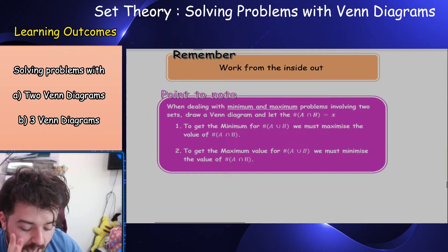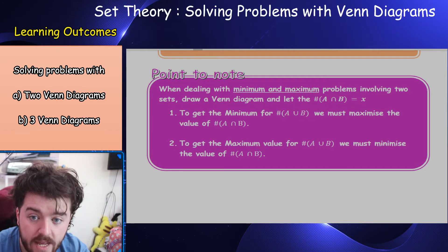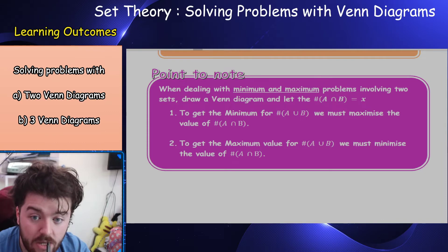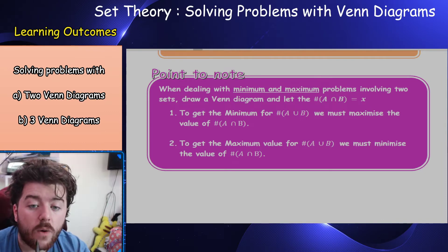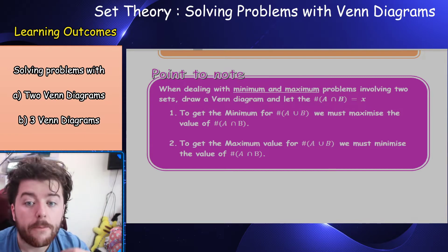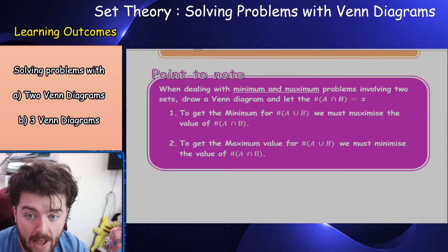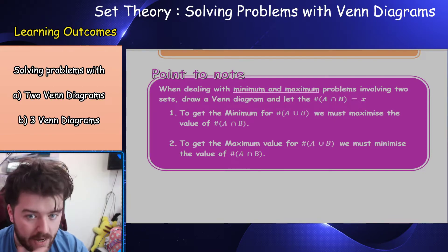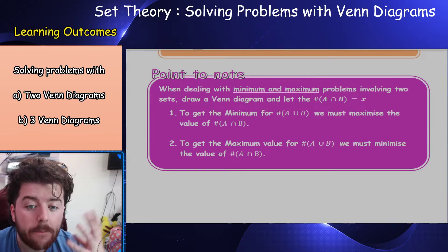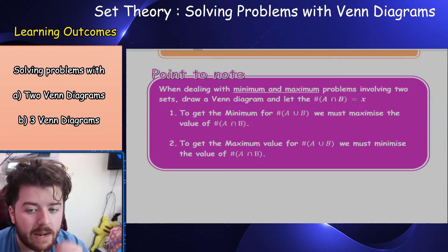A little point to note: when dealing with minimum and maximum problems involving two sets, we draw a Venn diagram and let the intersection equal x. If the question asks for a minimum value of the union, we must maximize the value of the intersection, and vice versa. If we want the maximum value of the union, we must minimize the value of the intersection.